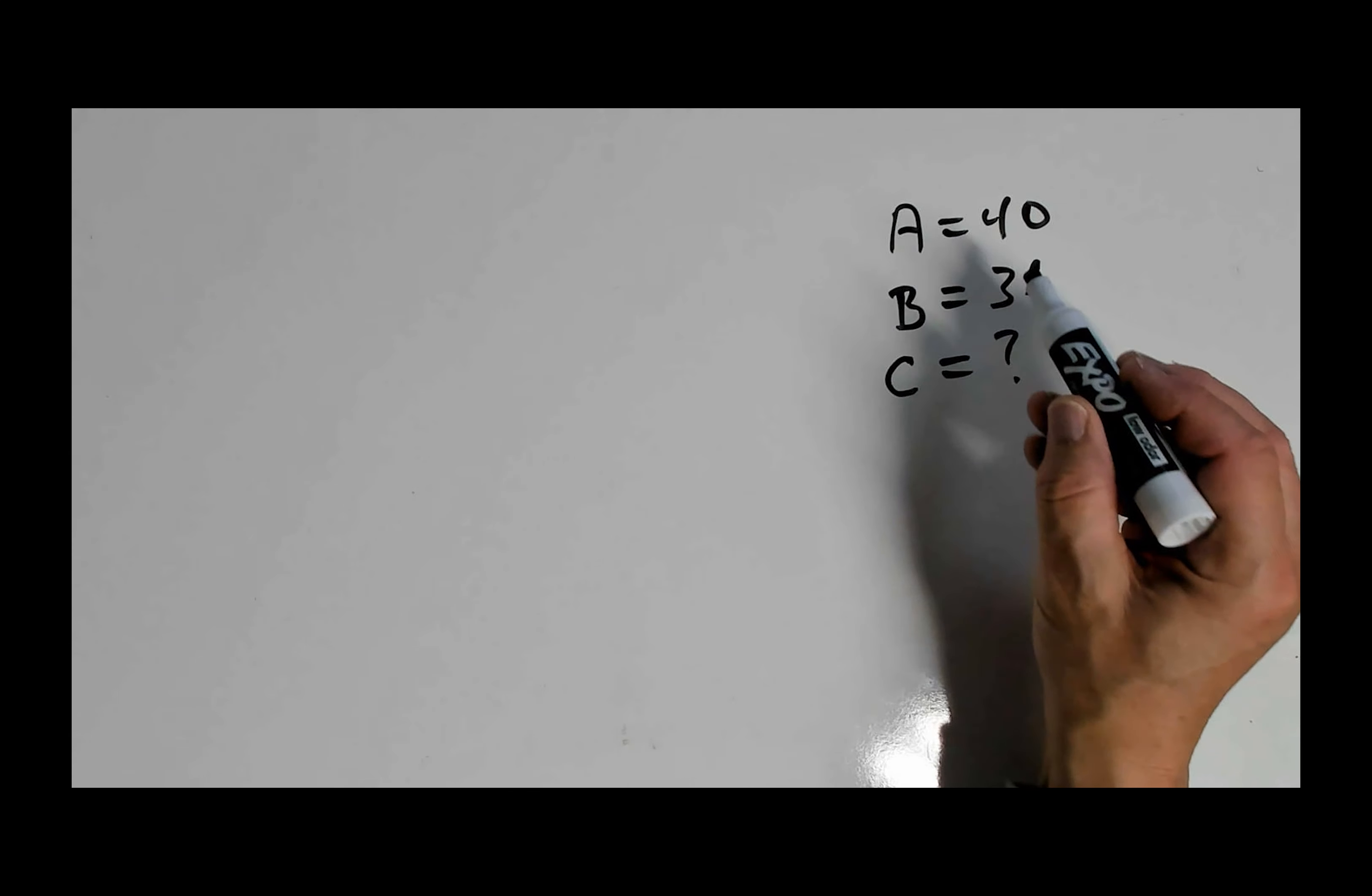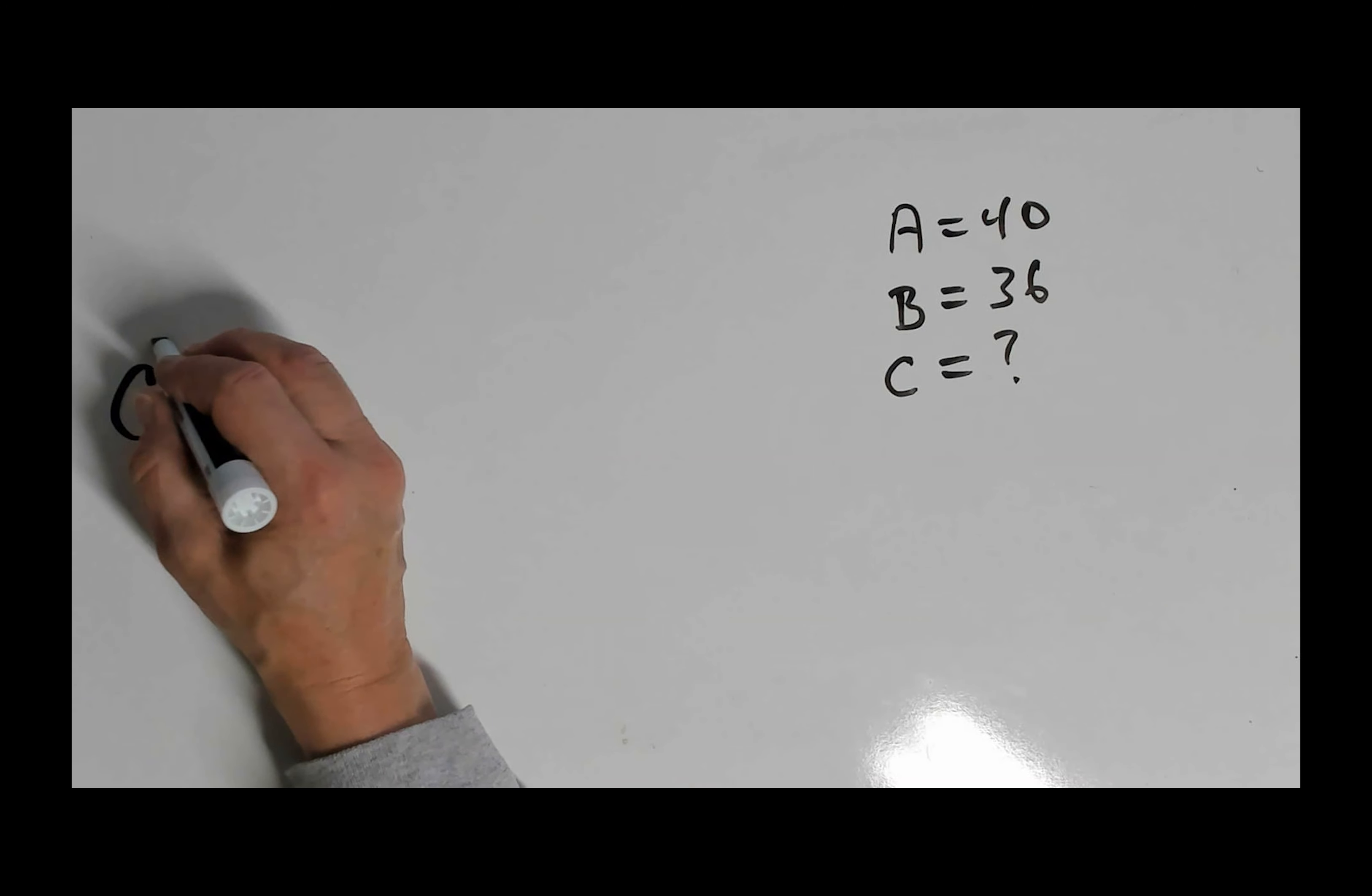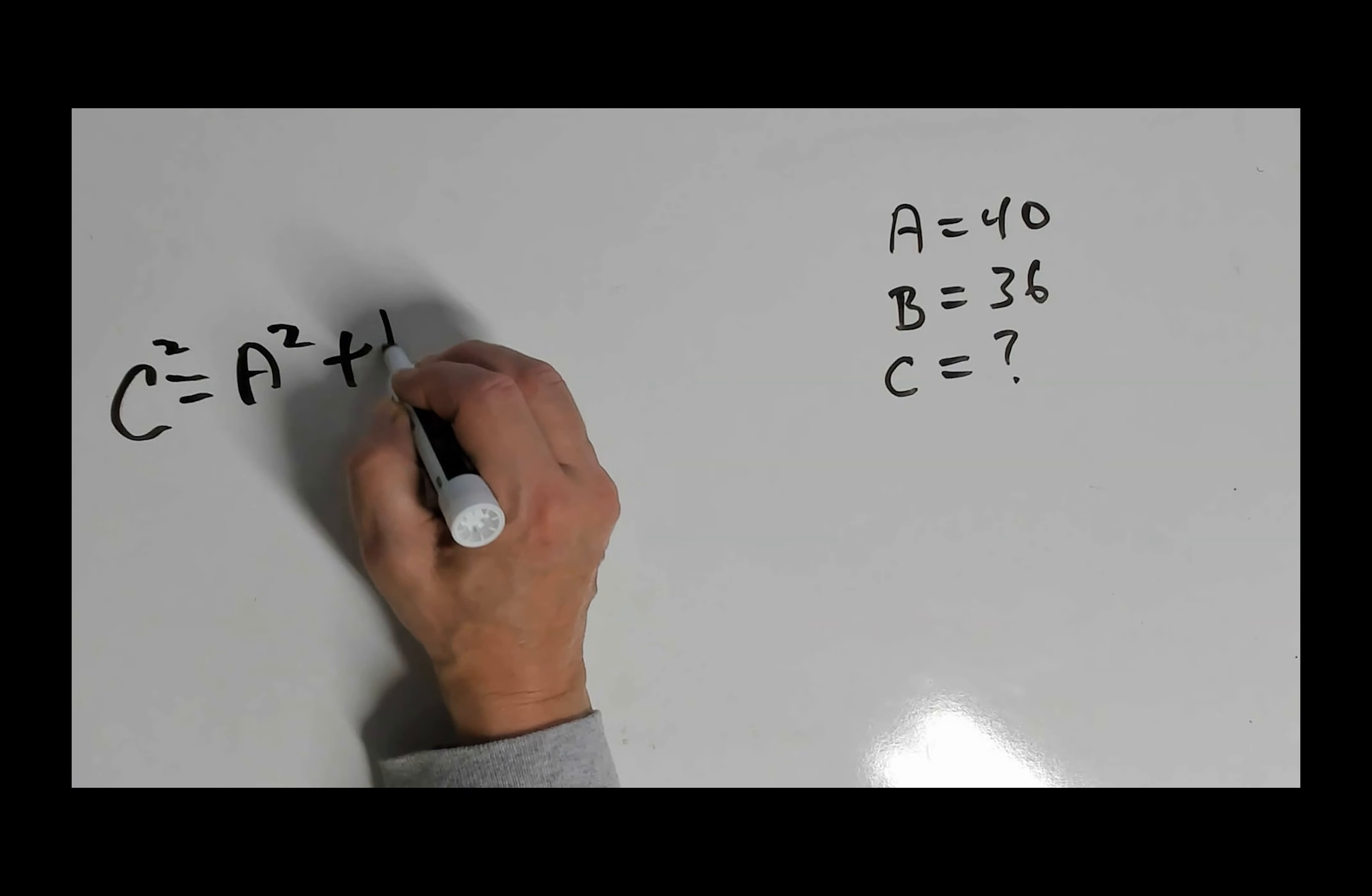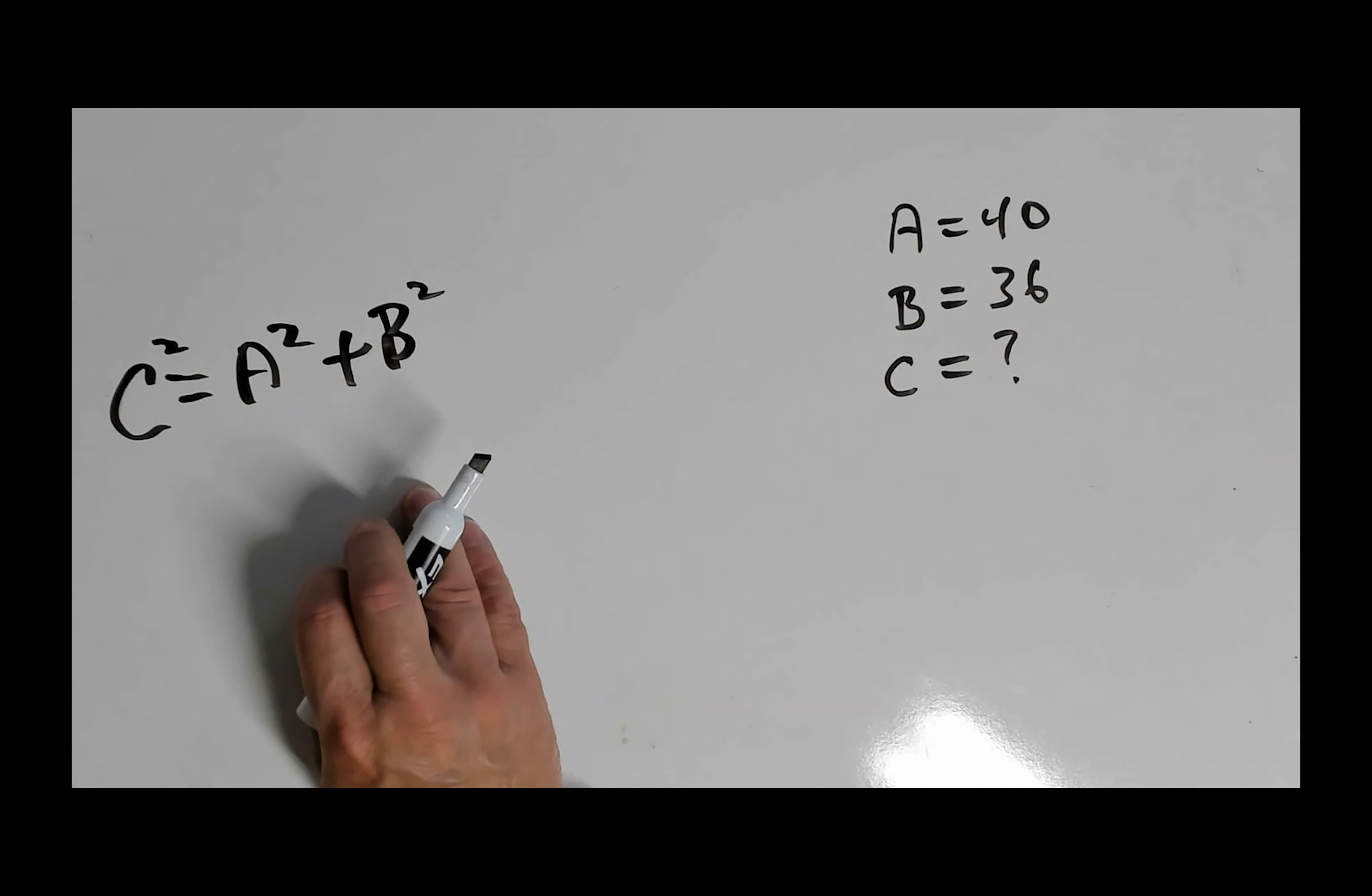Okay, I already wrote down our variables here, A, B, and C. So let's go ahead and work this out. All right, the formula is C squared equals A squared plus B squared. So that's our formula right there. So let's go ahead and fill in our variables.